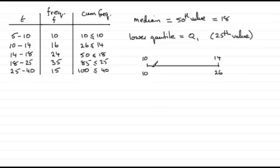So the 25th value is going to be somewhere close to the 14. We've got 10 values up to this 10, we've got 26 values up to this 14. So the 25th value, somewhere here, is going to be our Q1, lower quartile.